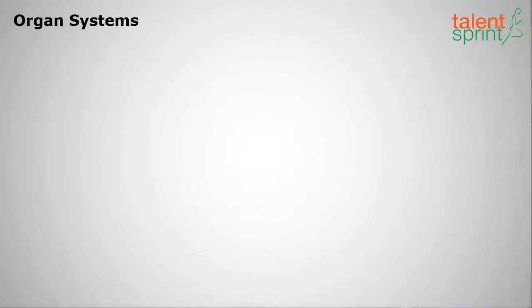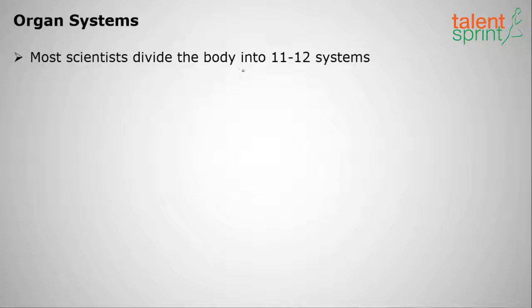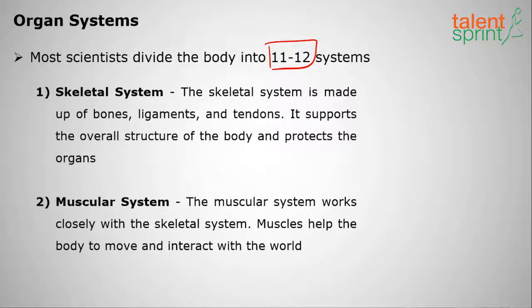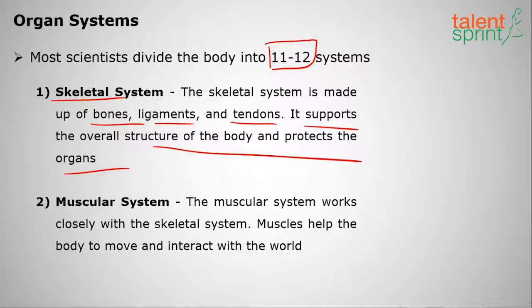Most scientists divide the body into 11 or 12 organ systems. The first is the skeletal system, which involves bones, ligaments, and tendons. It supports the overall structure of the body and protects the organs — much like a base or frame, similar to how a vehicle chassis supports a car.